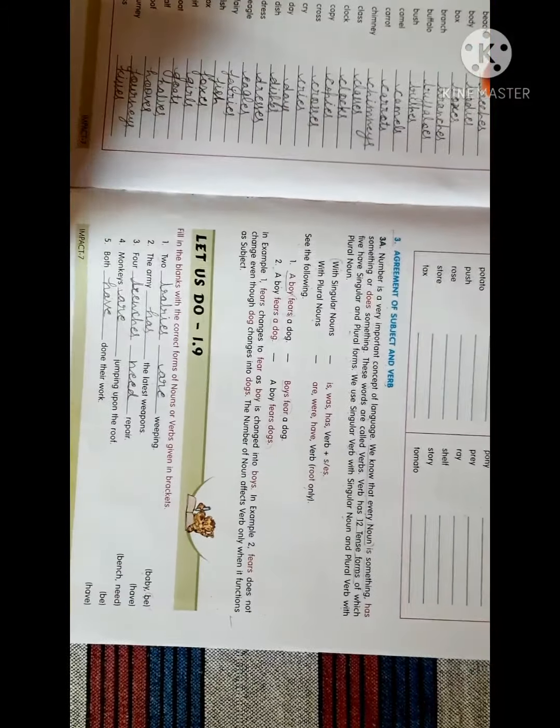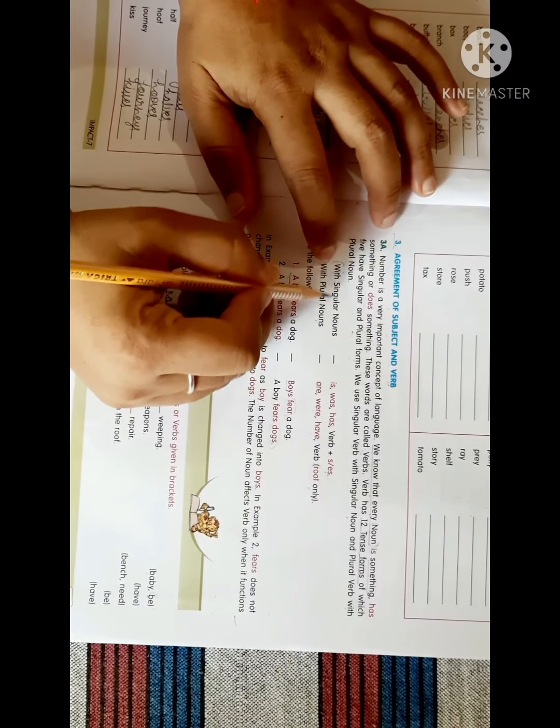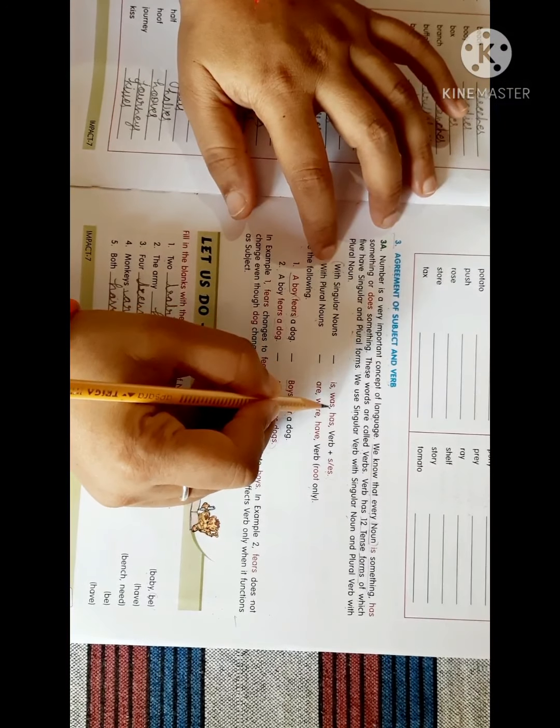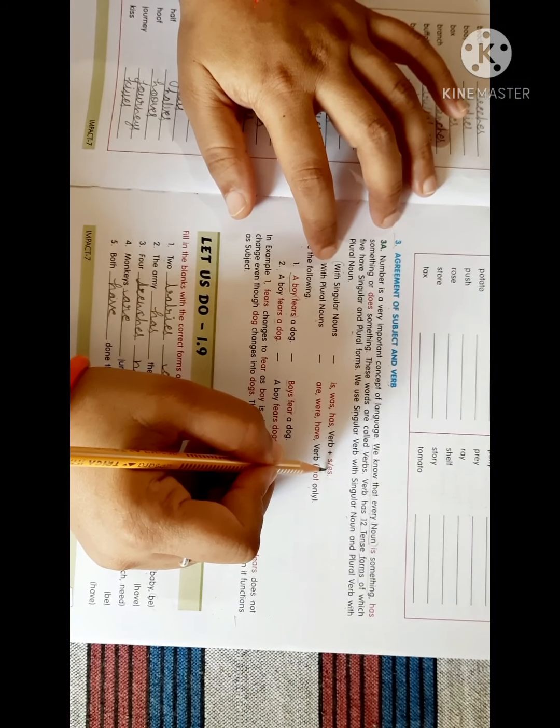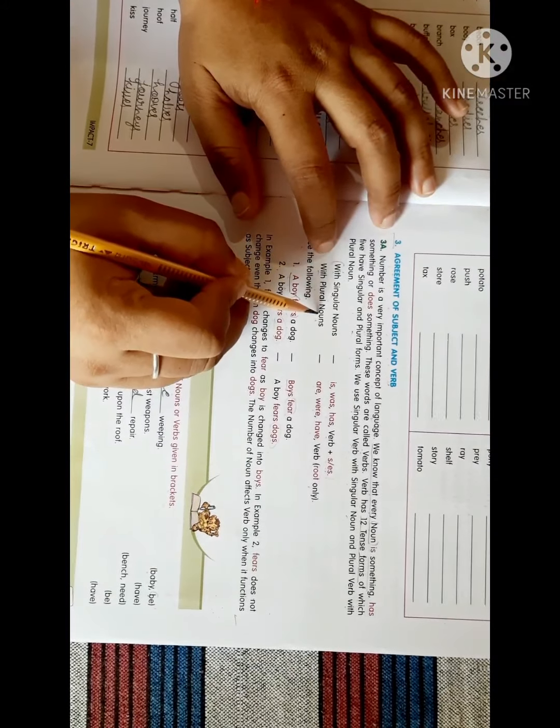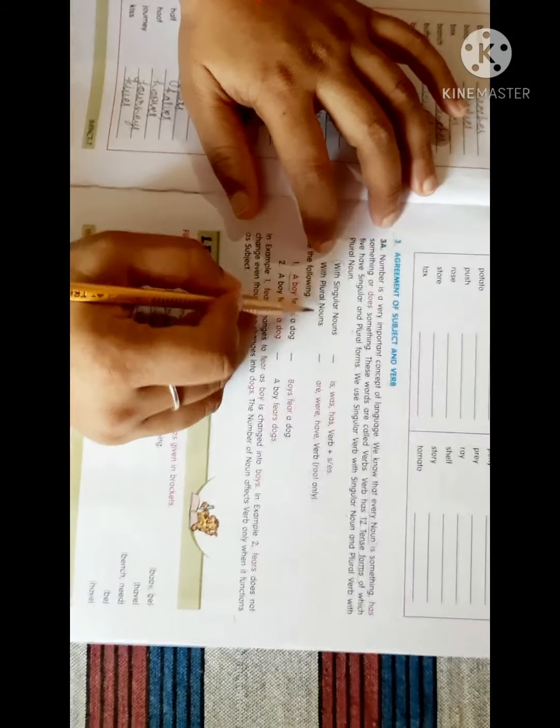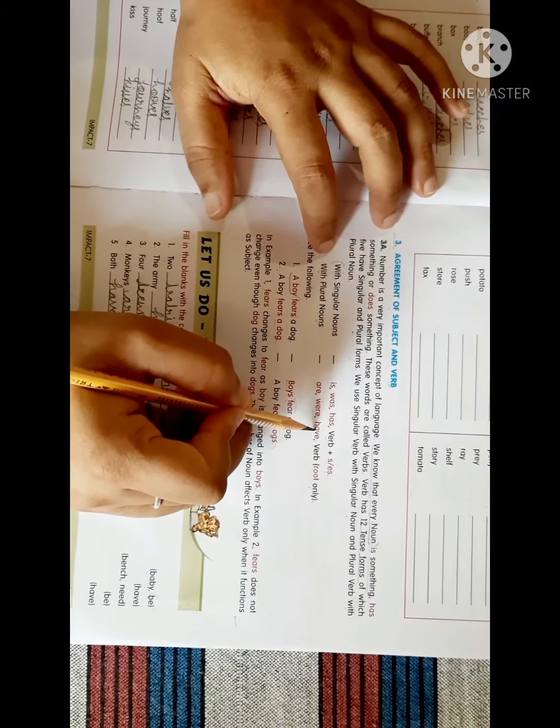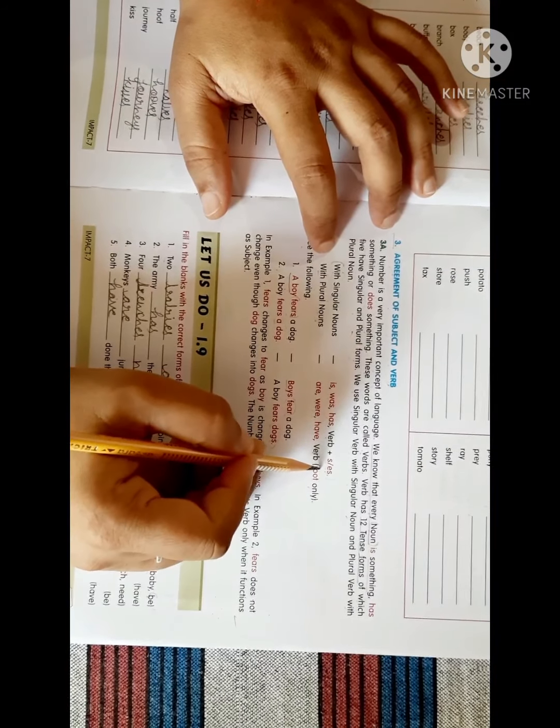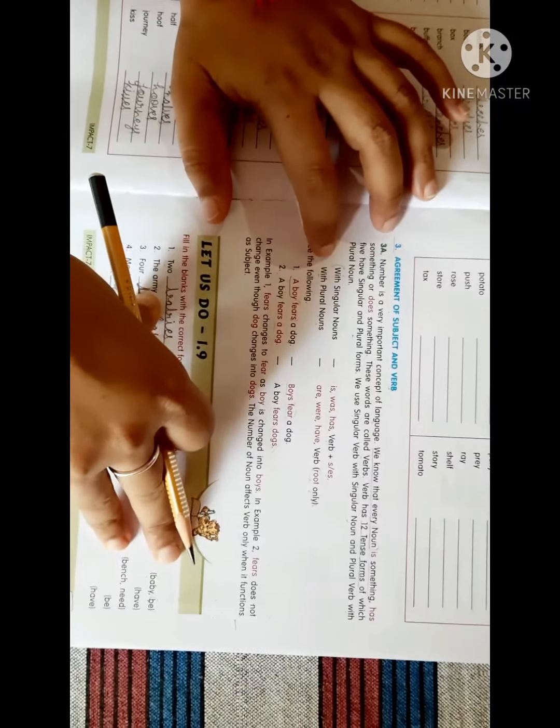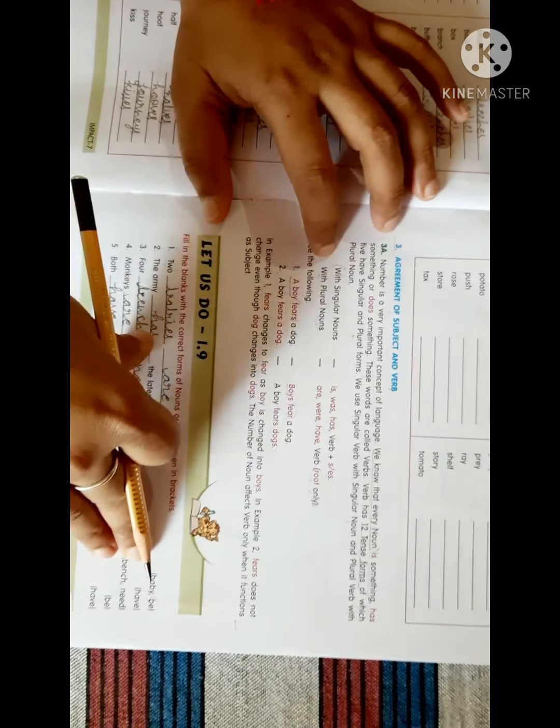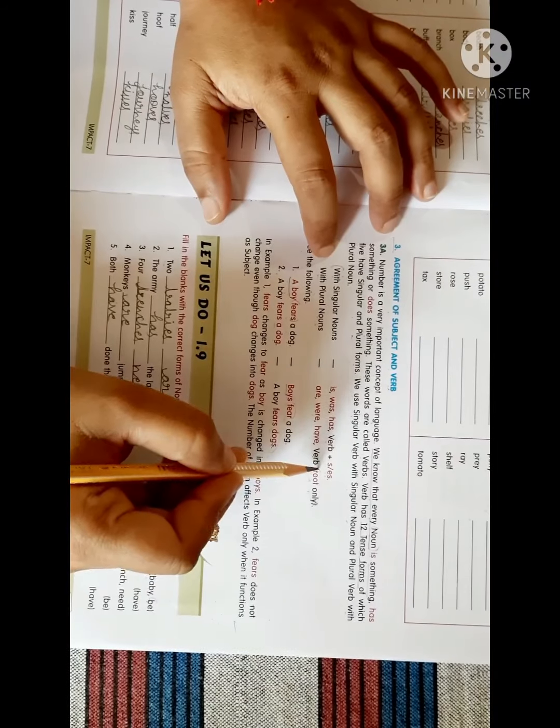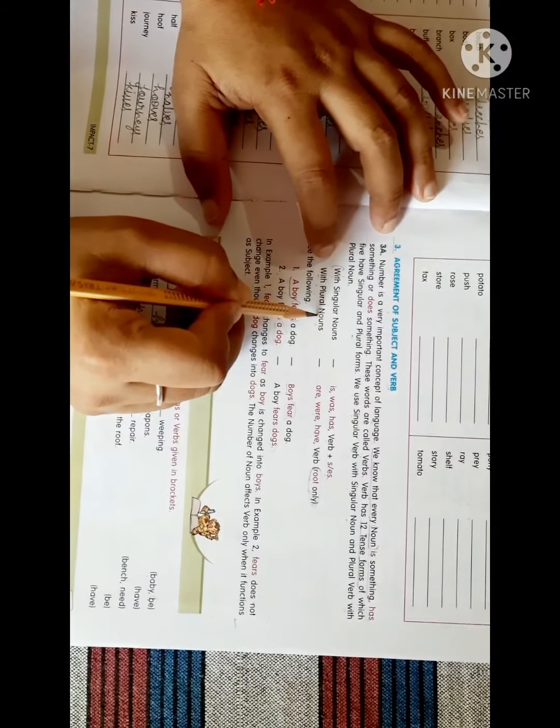So let's see what are singular nouns and plural nouns. With singular nouns there will be the use of is, was, has, verb+s/es. With plural nouns there will be the use of are, were, have, and the root form of the verb. Root means the exact particular form of any verb, like go, see, come. There will be the use of root word with the plural nouns.